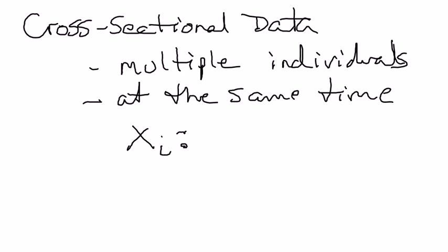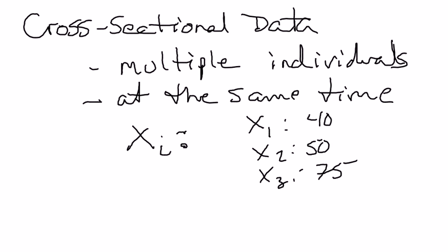So I would go from 1 to 400: X1 would be one starting salary — X1 might be $40,000, X2 might be $50,000, X3 might be $75,000, etc. The key thing is you're observing multiple individuals at exactly the same time. That time might be 2012, so X is the starting salary for college graduates in the year 2012.